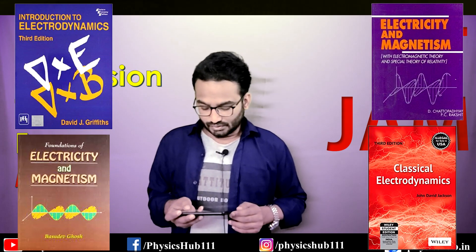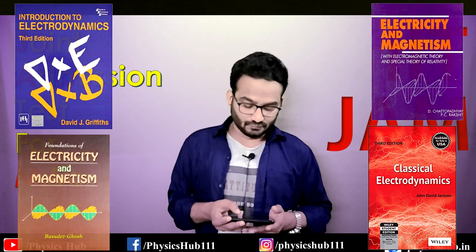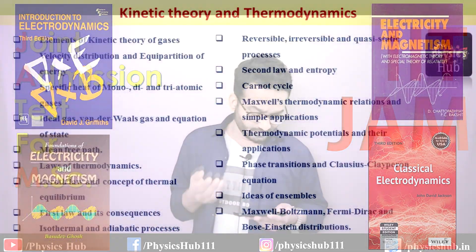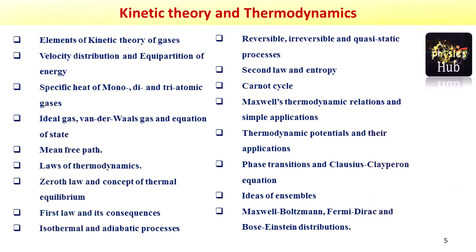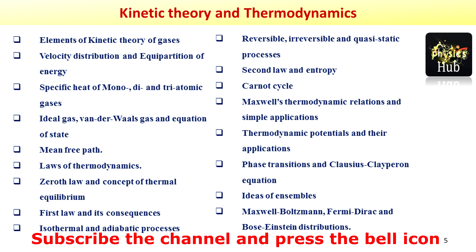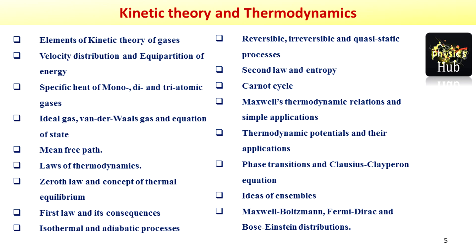The fifth section is Kinetic Theory and Thermodynamics. Topics include: elements of kinetic theory of gases, velocity distribution and equipartition of energy, specific heat of mono-, di-, and triatomic gases, ideal gas, van der Waals gas, equation of state, mean free path, laws of thermodynamics — zeroth law and concept of thermal equilibrium, first law and its consequences, isothermal and adiabatic processes, reversible, irreversible and quasi-static processes, second law and entropy, Carnot cycle, Maxwell's thermodynamic relations, thermodynamic potentials, phase transitions, Clausius-Clapeyron equation, and ideas of Maxwell-Boltzmann, Fermi-Dirac, and Bose-Einstein distributions.